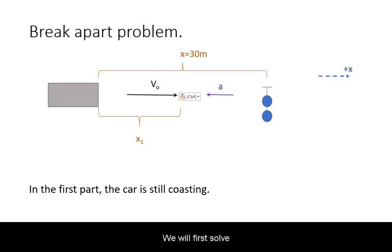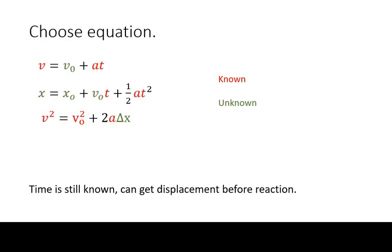We will first solve for the distance traveled during those first 2 seconds. We turn to our kinematic equations. And for this first part of the problem, the acceleration is 0 and we still know the time. Hence, it is the second equation that is relevant to us.